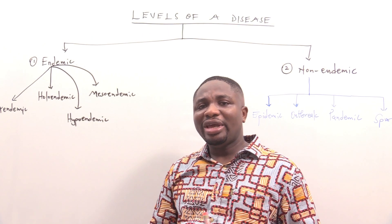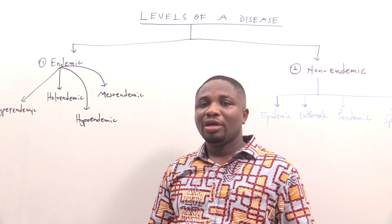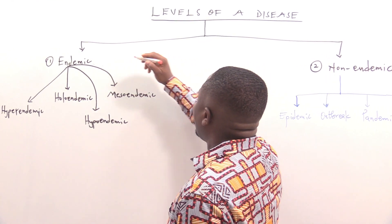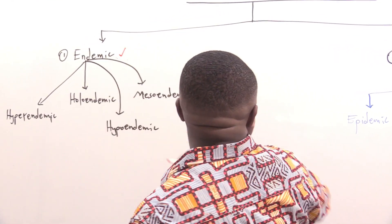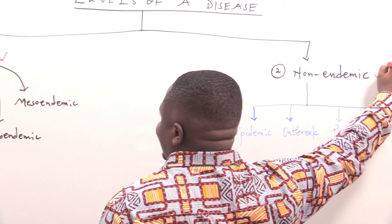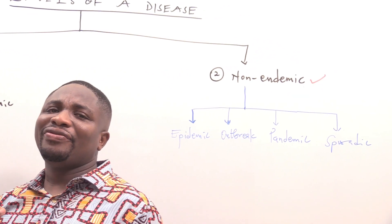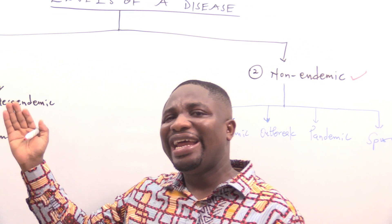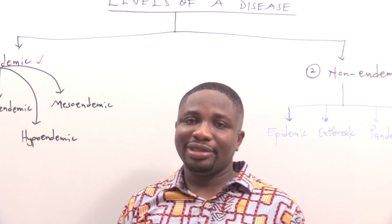For the level of a disease, we are going to group them into two: endemic and non-endemic. So let's start first by looking at the endemic and its subtypes.